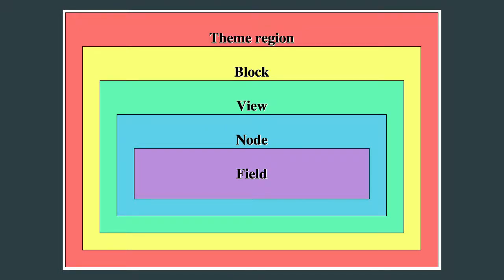In the example of more articles by the same author located in the right sidebar region, we place a block to print the articles. That block was created using a view. The view prints nodes, and from those nodes we print fields like the title, the date created, or the text. So one single piece of content in the website is already five different templates. Multiply that by how many elements you have in the page and you can easily end up with 100 templates for one page.